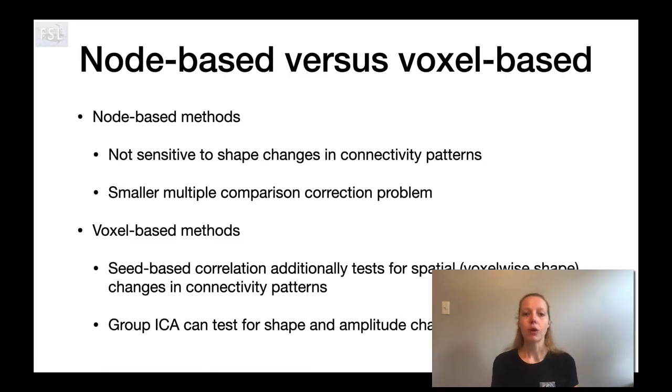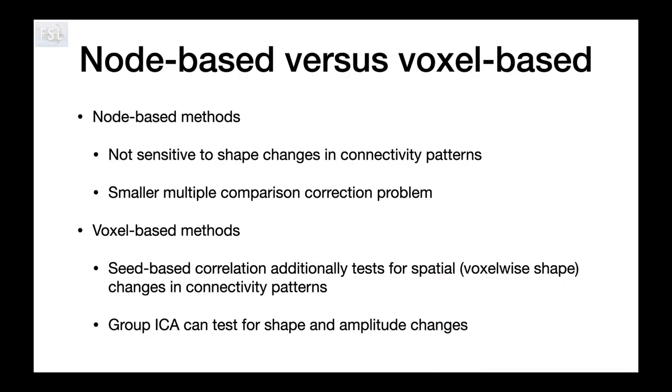To build on that a little bit more, node-based methods importantly are not sensitive at all to shape changes in connectivity patterns because the nodes are determined at the start of the analysis and the nodes don't change, are not allowed to change in terms of their shape and location as part of the analysis. So if you expect, for example, as part of development in children, if you expect that networks might change in terms of their spatial organization, then node-based methods are not a good fit for that. And voxel-based methods are more appropriate for that. And also in node-based methods, an advantage there is that you do have typically a smaller multiple comparisons problem. So instead of correcting for all of the voxels in the brain, you only have to correct for all of the edges. And of course, how many edges you have depends on the number of nodes, but it's typically fewer than the number of voxels in the brain. Voxel-based methods, on the other hand, are able to test for spatial changes in connectivity patterns. And a group ICA, of course, can also test for strength changes or amplitude changes.